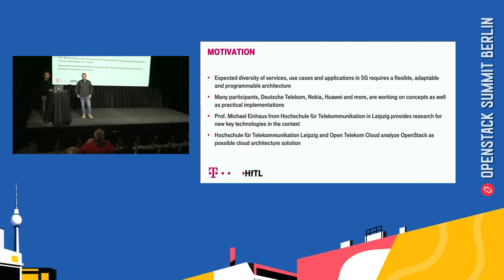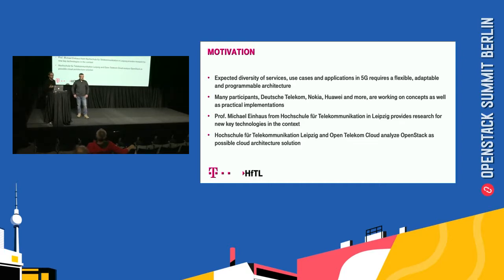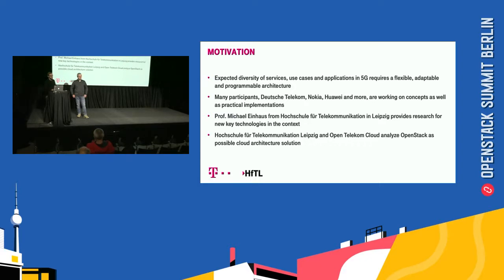About the motivation of this project: we expect for the diversity of 5G use cases that requires a lot of flexibility that should be adaptable and a programmable architecture. Also, vendors like Deutsche Telekom, Nokia, and Huawei work on concepts as well as practical implementations. And our colleague Professor Michael Einhaus from Hochschule for Telecommunication in Leipzig provides a research project for new key technologies in this context.